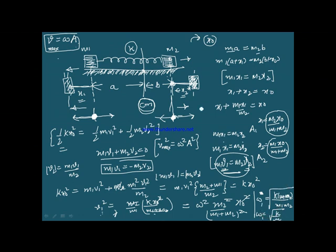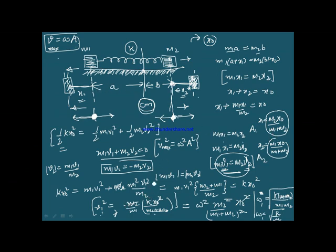Interestingly, if you find ω for the second mass using the same relationship, you get the same value: ω2 = √(k/μ). So the time period for both masses is the same — only the amplitude will be different, and the velocity at the mean position will be different for both masses (in opposite directions).